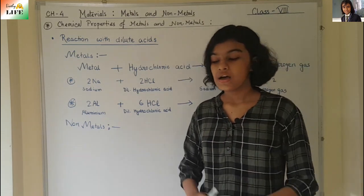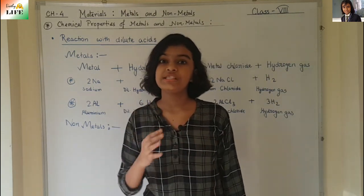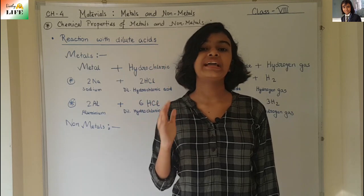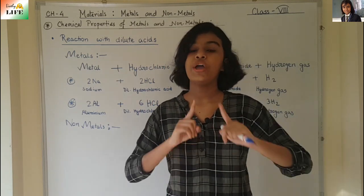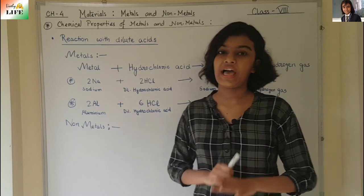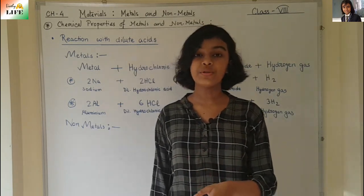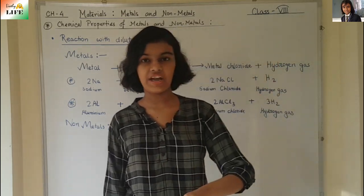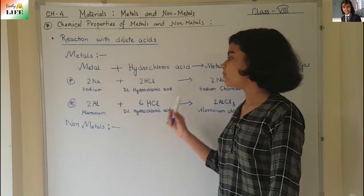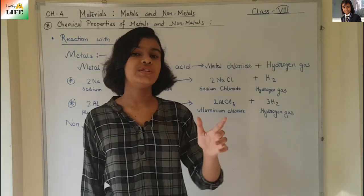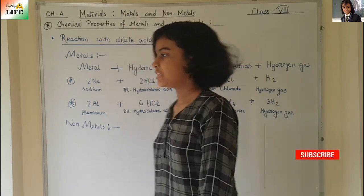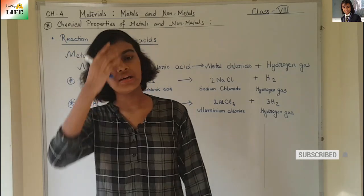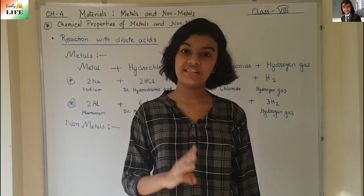An important point: metals which are less reactive than hydrogen do not show any reaction with dilute acids. For example, copper, silver, and gold are less reactive than hydrogen, so they cannot replace hydrogen from hydrochloric acid and therefore do not react with it.